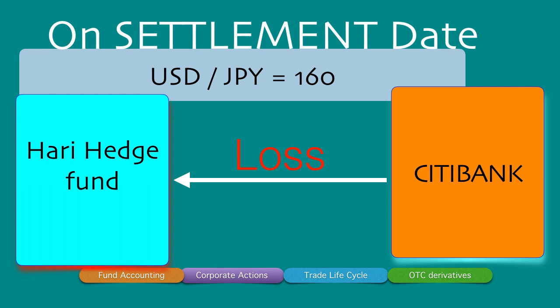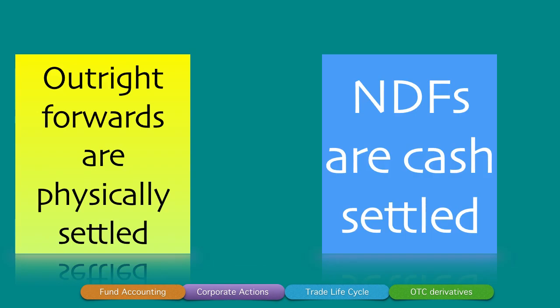The losses and profits are cash settled between the two counterparties in an NDF, or non-deliverable forward. To summarize: outright forwards are physically settled — there is an exchange of asset for asset. In an NDF, they are cash settled — there is no exchange of asset for asset, and only profits and losses are settled between the counterparties.